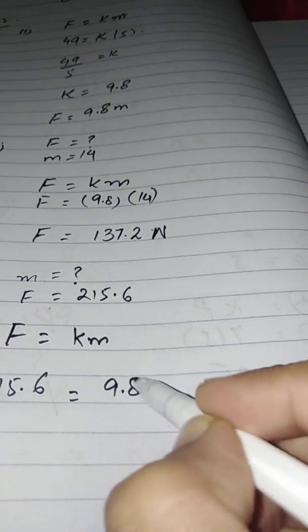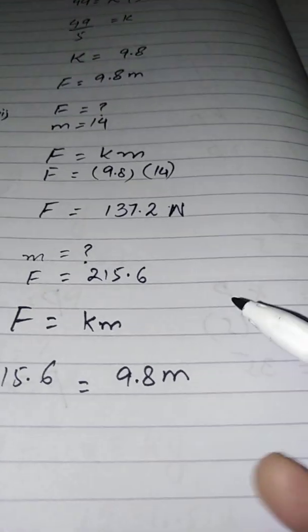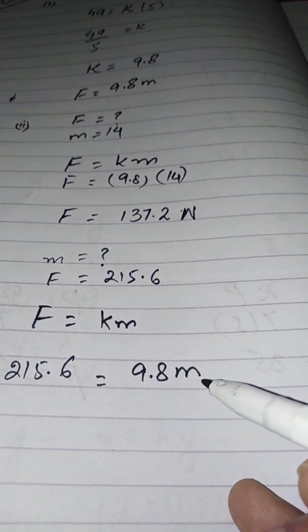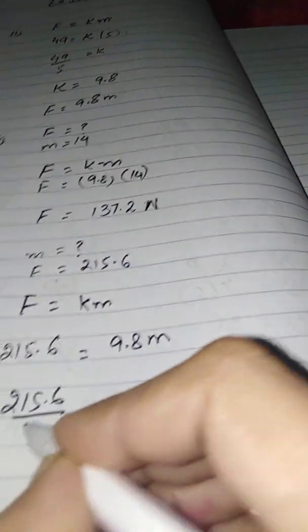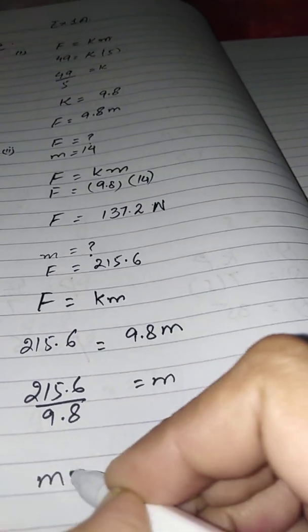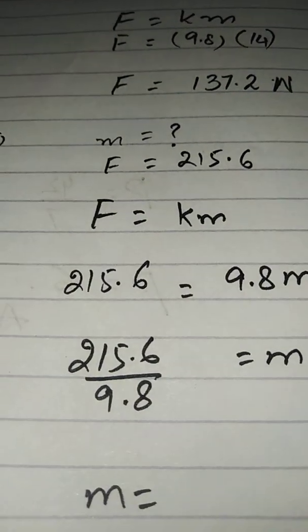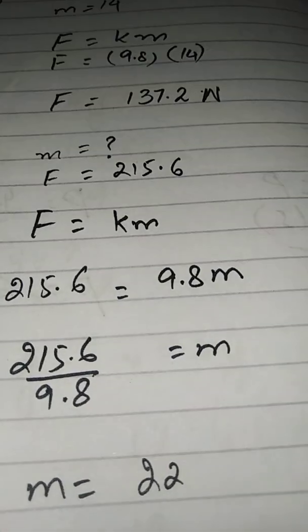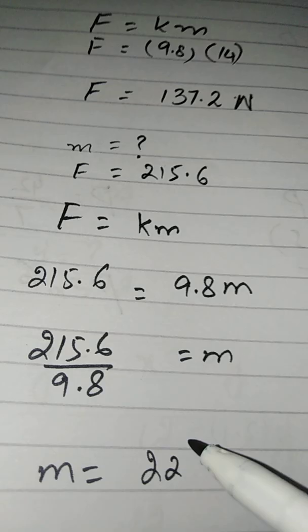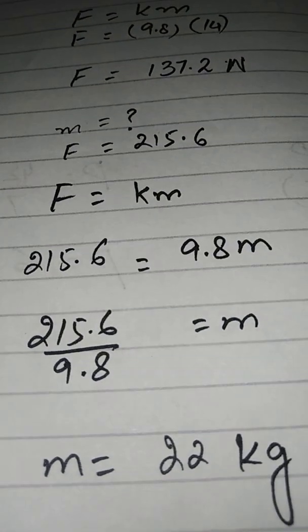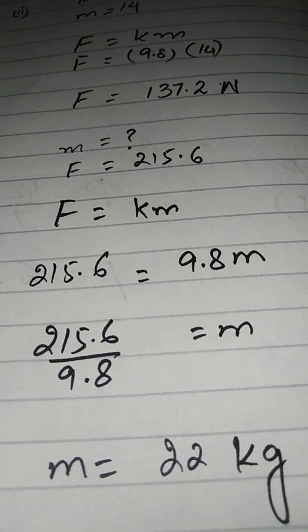You have to find M. Since 9.8 is multiplying with M, when it comes to the other side it will divide. So the value of M is 22 kilograms. Don't forget to put the unit with the answer. The third part is done.